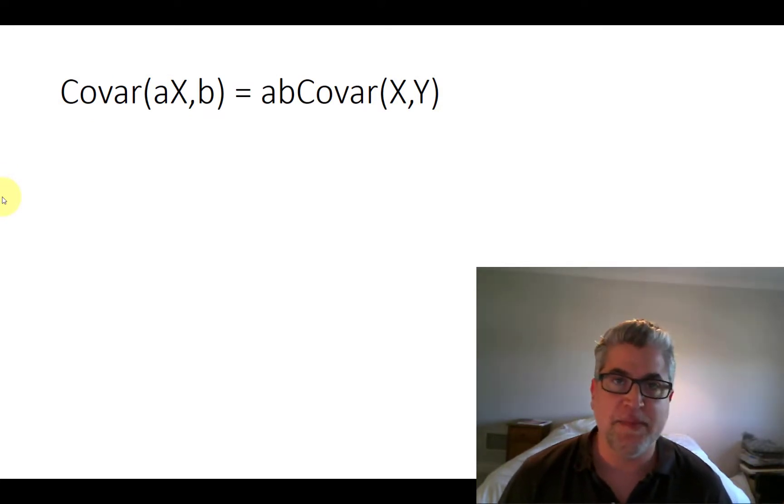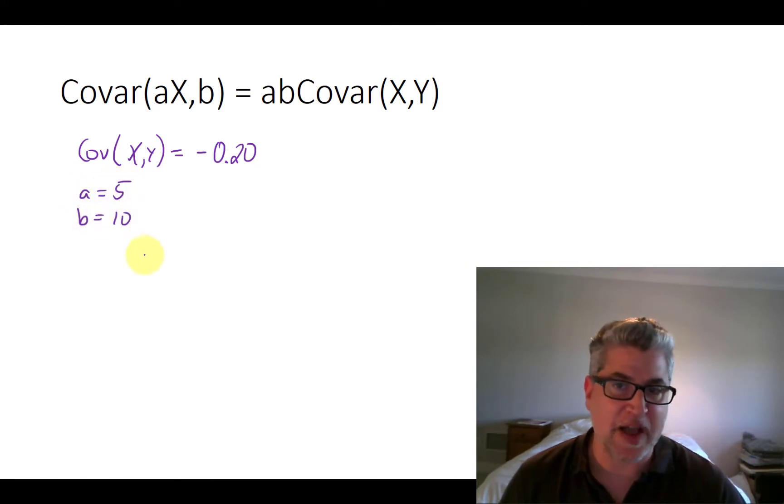So the main use of this is going to be for us figuring out what the variance of a particular portfolio is. The variance of a sum of random variables. But real quickly, we could do a pretty quick example. If we know, for example, that the covariance between X and Y is, let's say, negative 20%. And we have five shares of IBM. So A is five. And let's say, 10 shares of Apple.